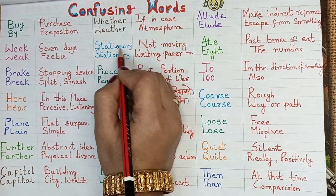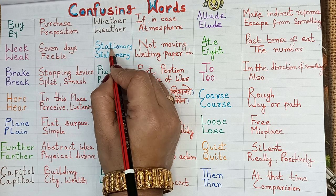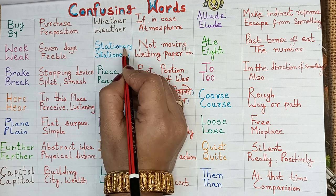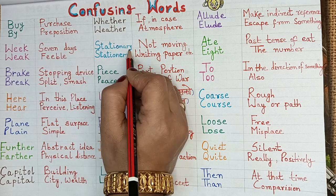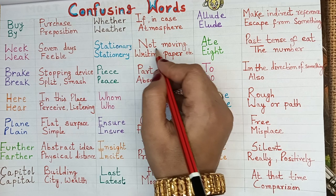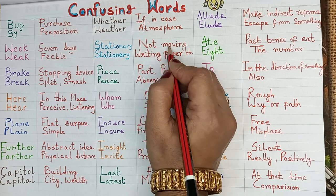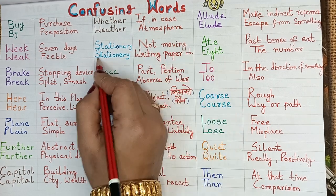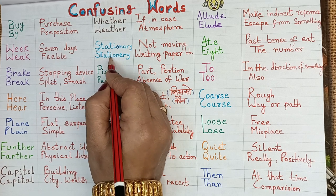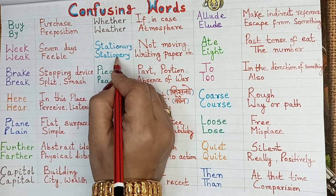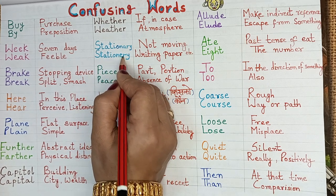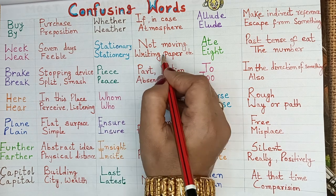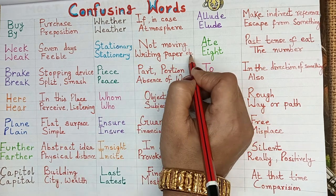Stationary — S-T-A-T-I-O-N-A-R-Y — this means not moving. S-T-A-T-I-O-N-E-R-Y — stationery means writing paper, etc.